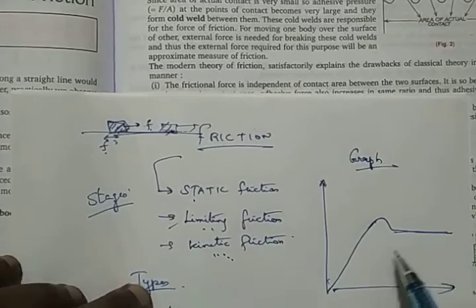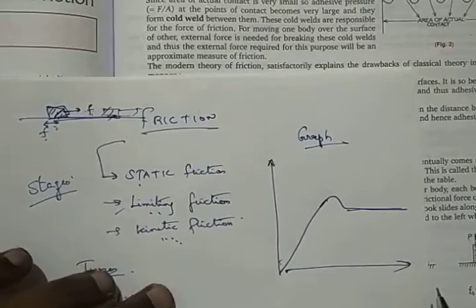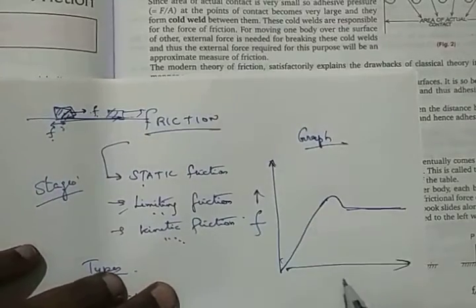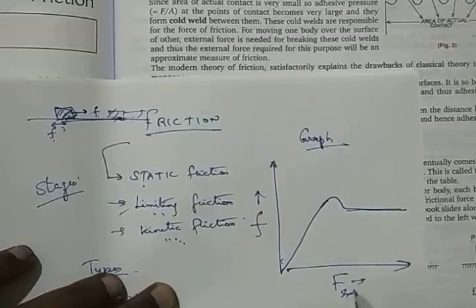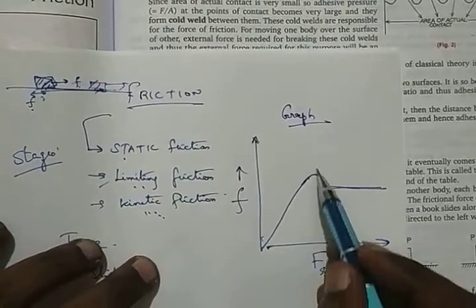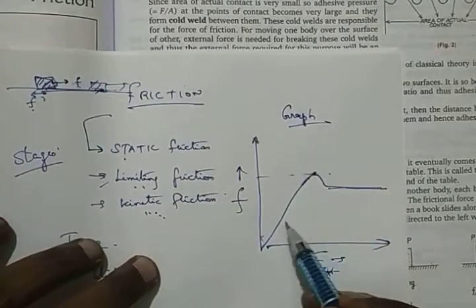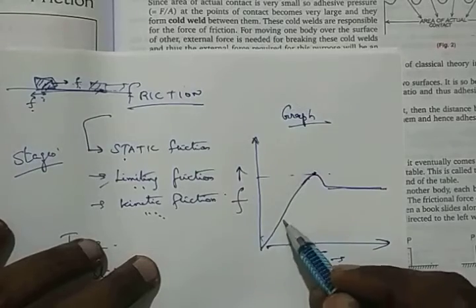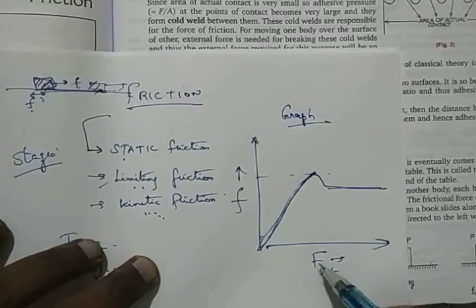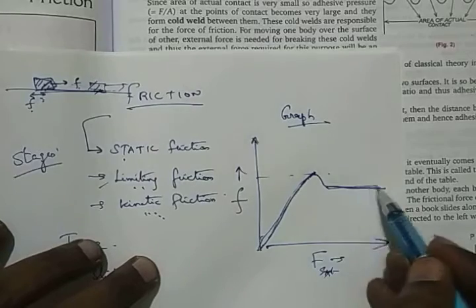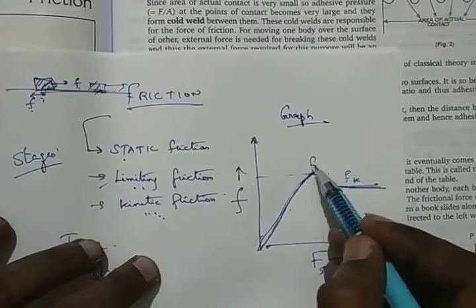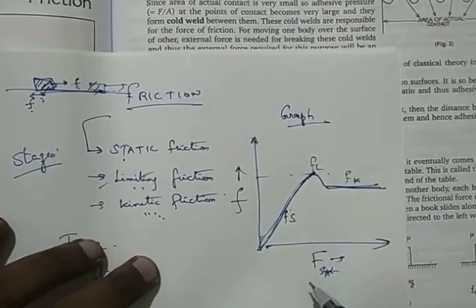This is what we have seen about the frictional force. This is the frictional force and this is the external force acting here. The limiting friction is the maximum friction, and this is the way in which frictional force keeps on increasing up to that point. Then this is the kinetic friction, Fk, and this is Fl (limiting), and this is Fs (static).